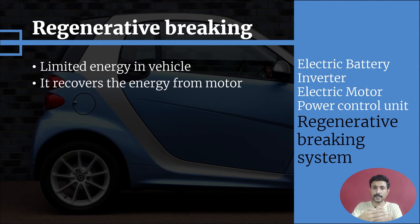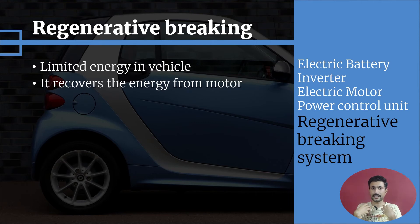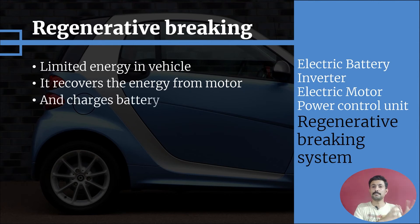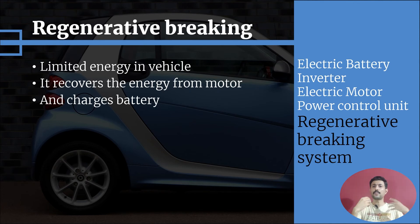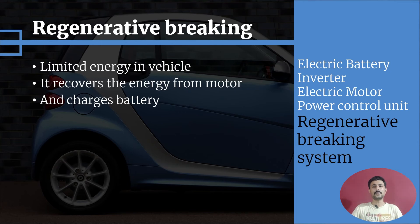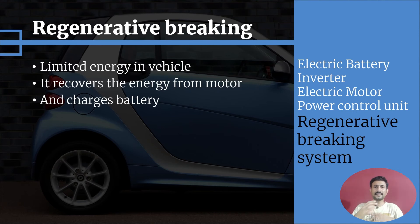The regenerative braking system recovers energy from the motor while we are braking. Whenever we apply the brake, the electrical motor generates energy from that action and feeds it back to the batteries or ultracapacitors. That regenerated energy is stored in the batteries, and this is how regenerative braking works.